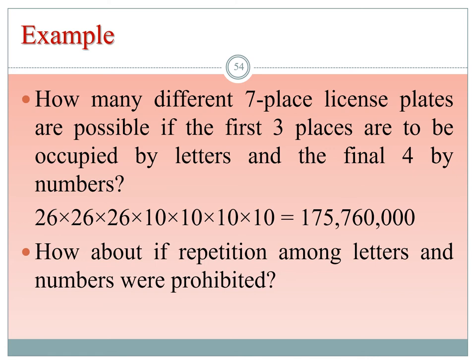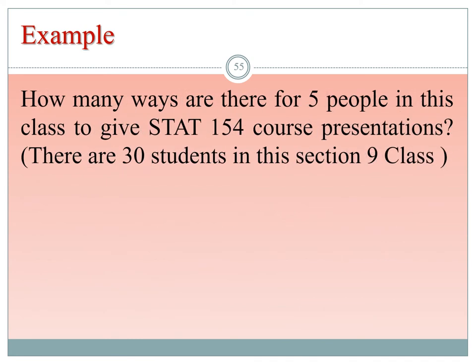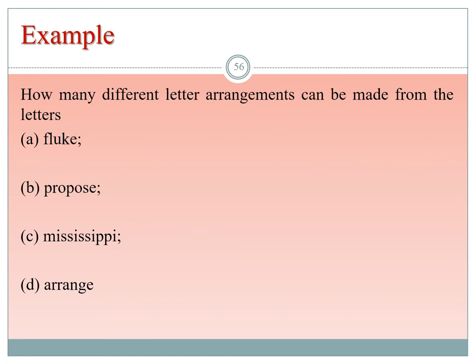Letter arrangement examples: For the word FLUKE, which has 5 different letters (F, L, U, K, E each appearing once), the total number of arrangements is 5!. For the word PROPOSE, which has 7 letters with P appearing twice and O appearing twice, the total arrangements is 7! / (2! × 2!). For MISSISSIPPI with 11 letters (S four times, I four times, P two times), the total is 11! / (4! × 4! × 2!). For ARRANGE with 7 letters (R twice, A twice), the total is 7! / (2! × 2!).